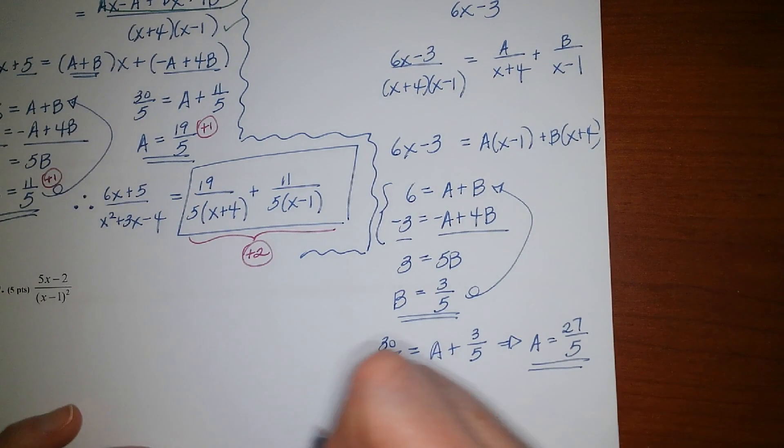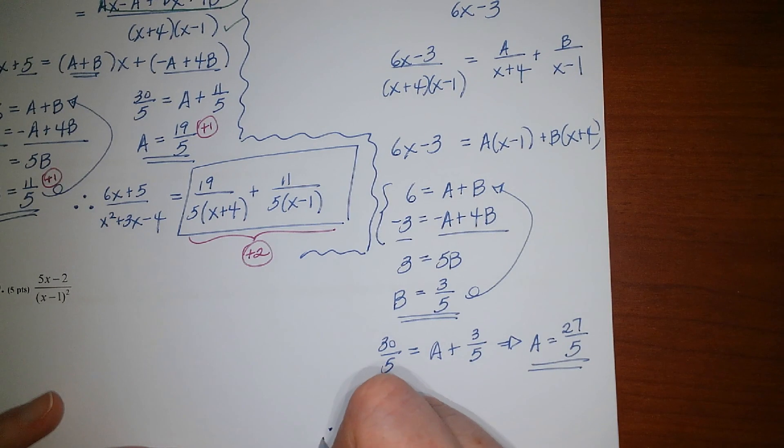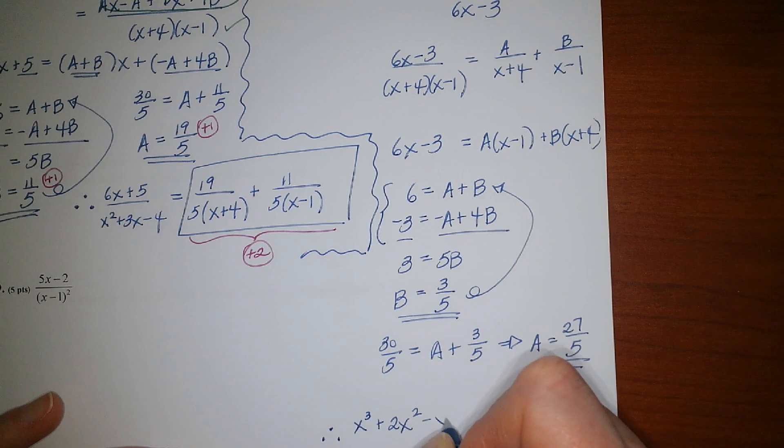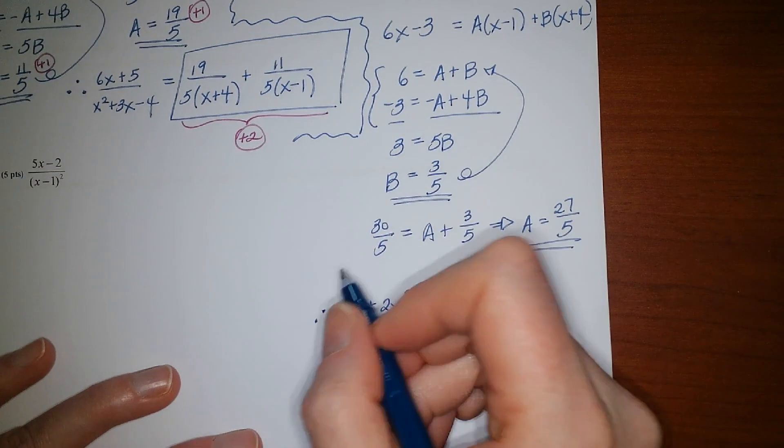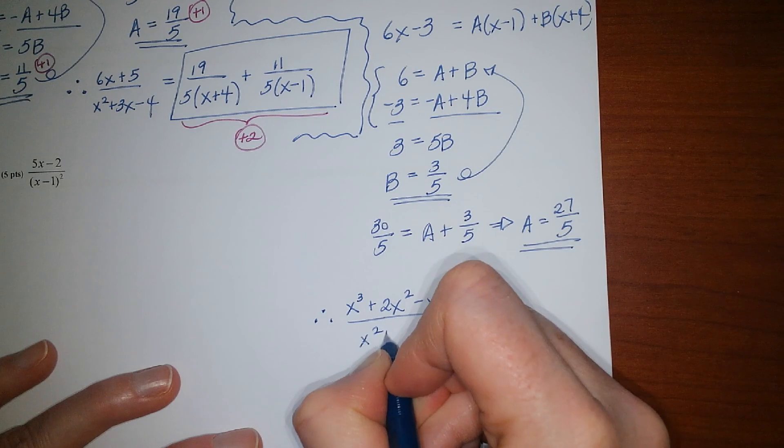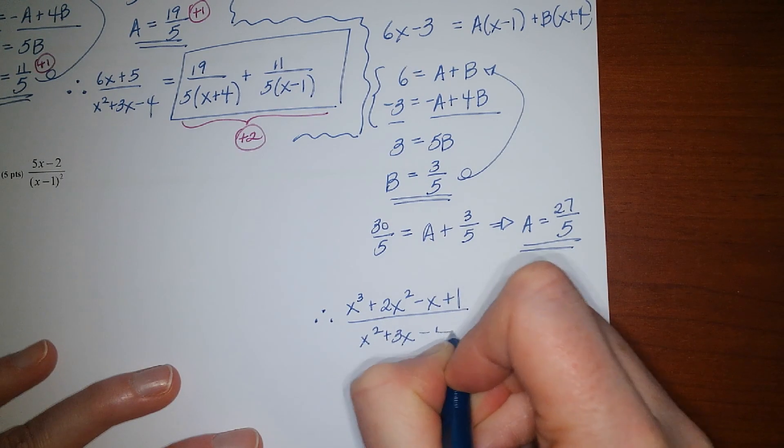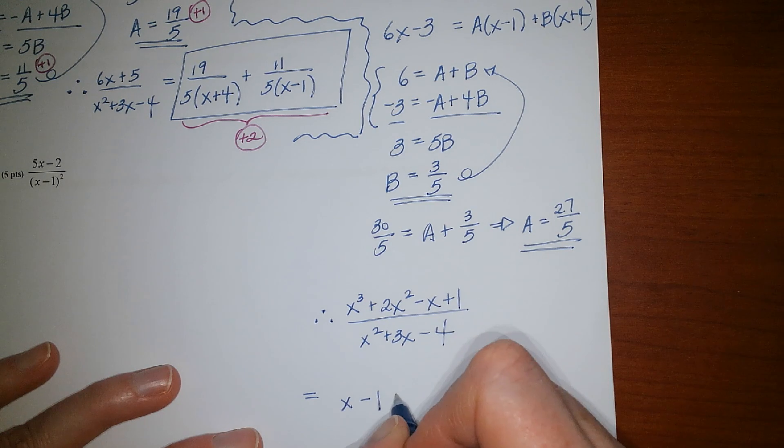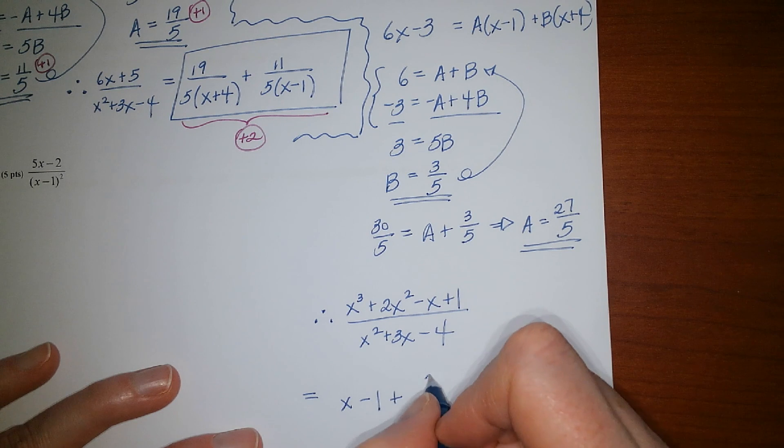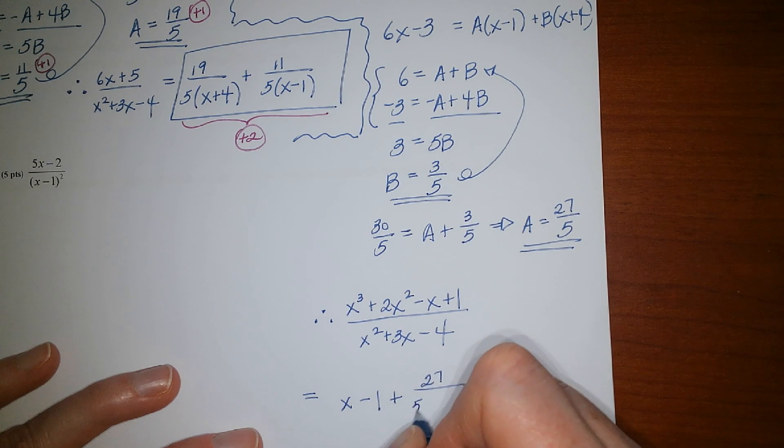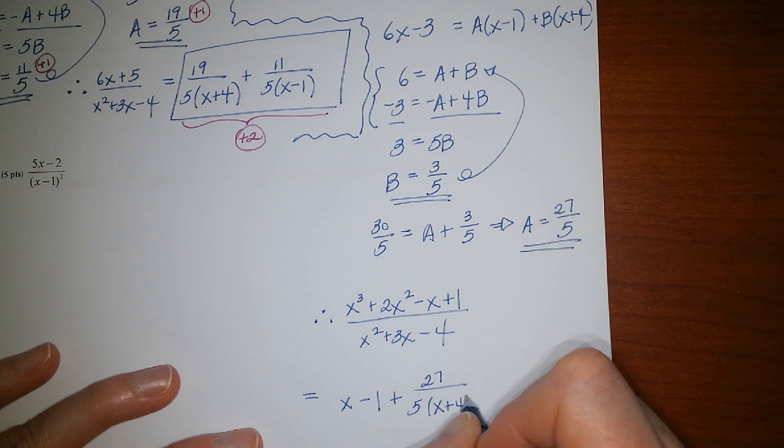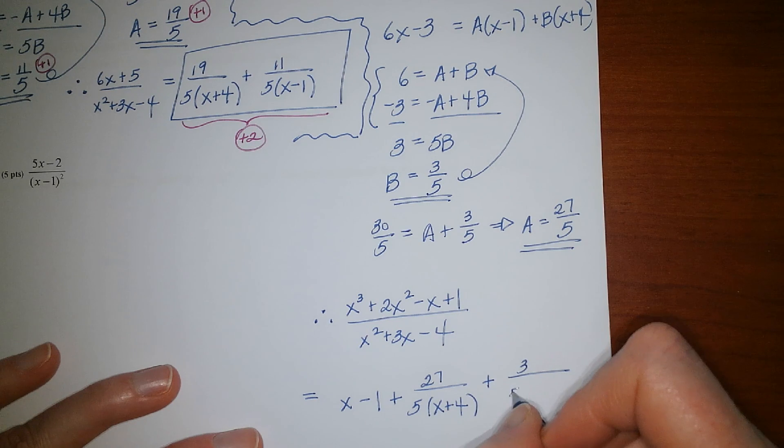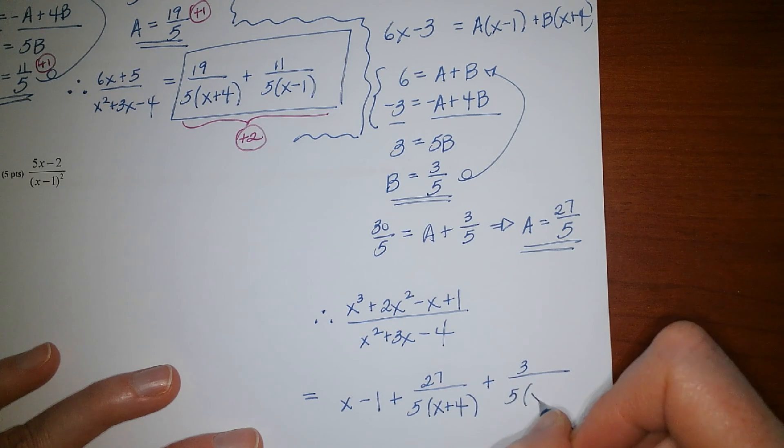All right. Your final answer would be the x cubed plus 2x squared minus x plus 1 over x squared plus 3x minus 4 is equal to x minus 1 plus 27 over 5 times x plus 4 plus 3 over 5 times x minus 1.